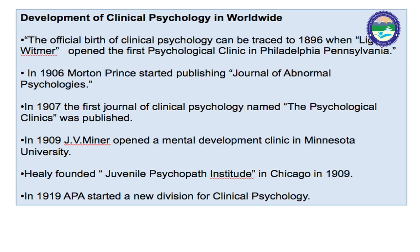इसके बाद 1906 में Morton Prince ने abnormal psychology के journal का publication शुरू किया। 1907 में 'The Psychological Clinic' नामक clinical psychology की पहली पत्रिका प्रकाशित हुई, जिसमें बच्चों की मानसिक स्थिति के ऊपर किये गए प्रयोगों का वर्णन किया गया। 1909 में J.V. Minor ने Minnesota विश्वविद्यालय में एक मानसिक विकास clinic खोला, और Healy ने 1909 में Chicago में juvenile psychopath institute की स्थापना की। 1960 में abnormal और social psychology की पत्रिका प्रकाशित हुई।